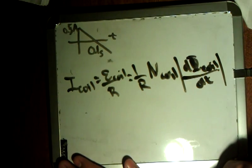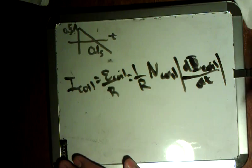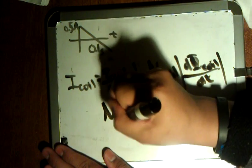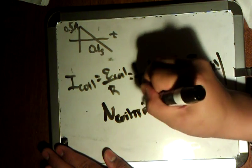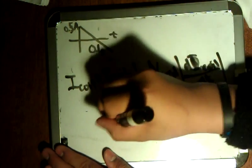So, now that we have that, we can put a few more things out there, such as N coil times pi r squared of the coil, which is the area, over R.